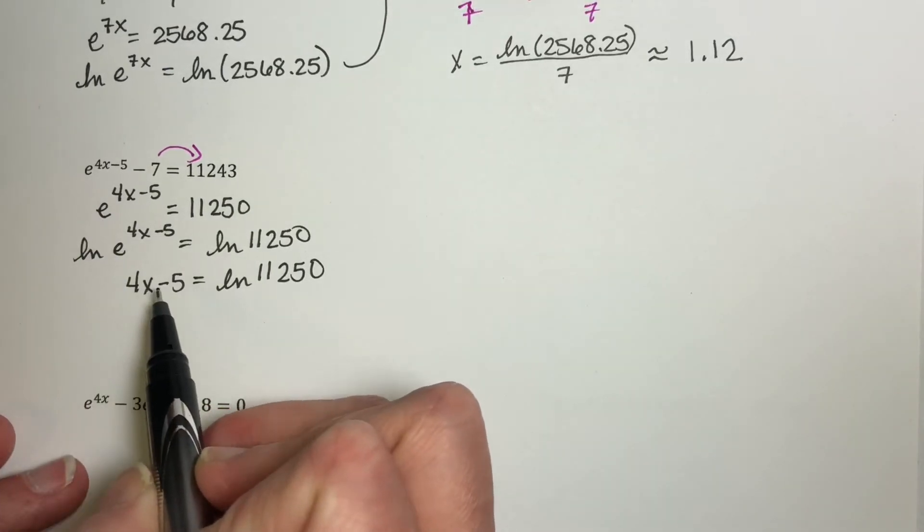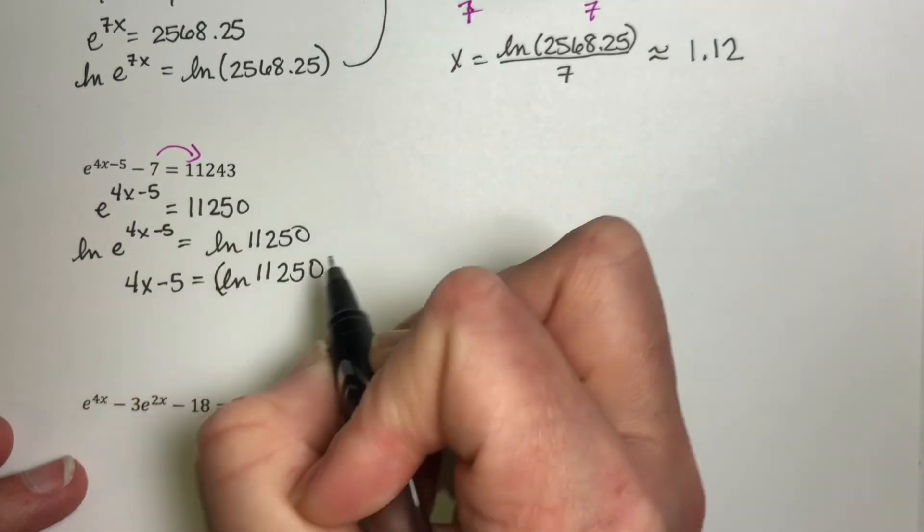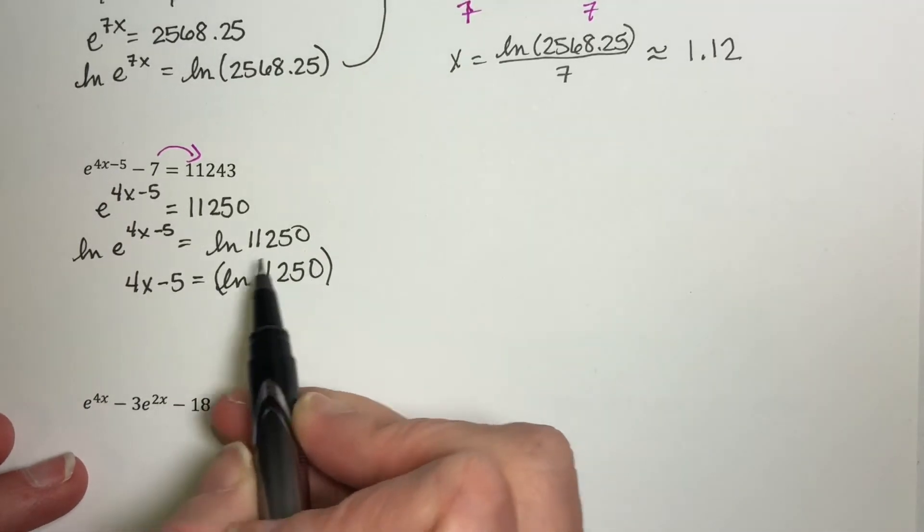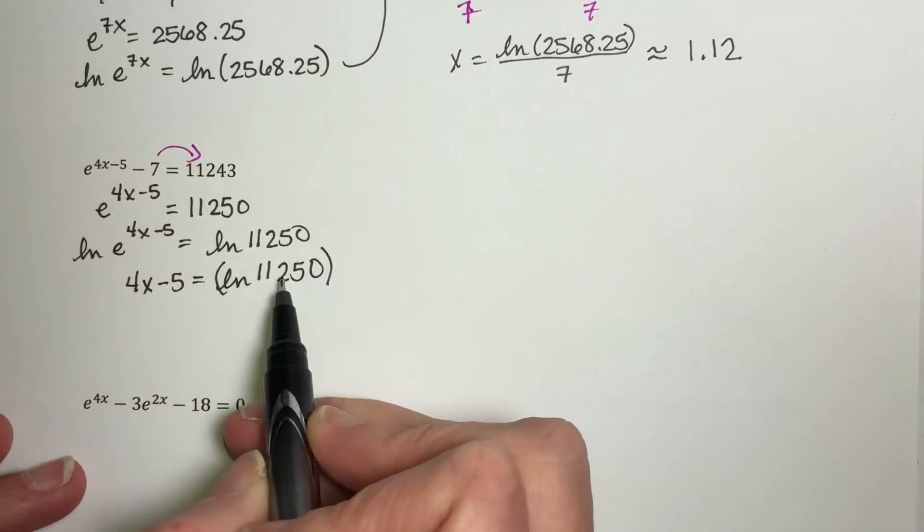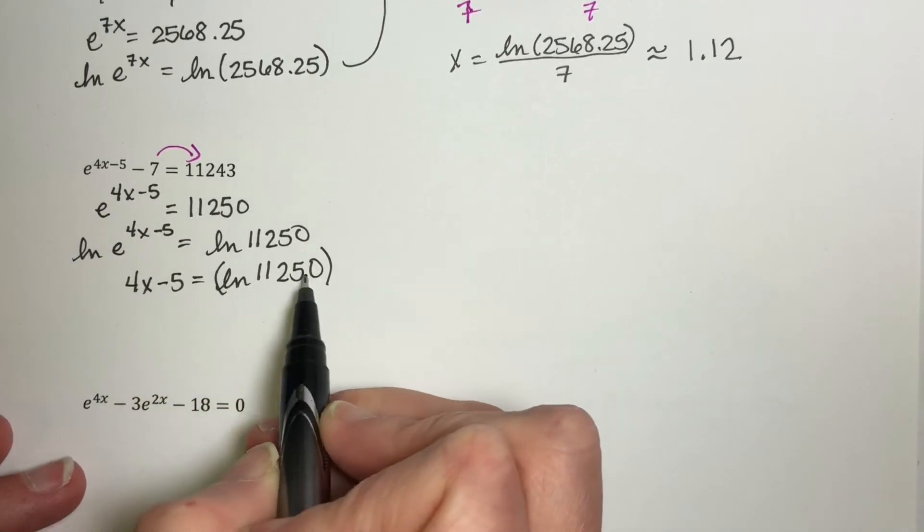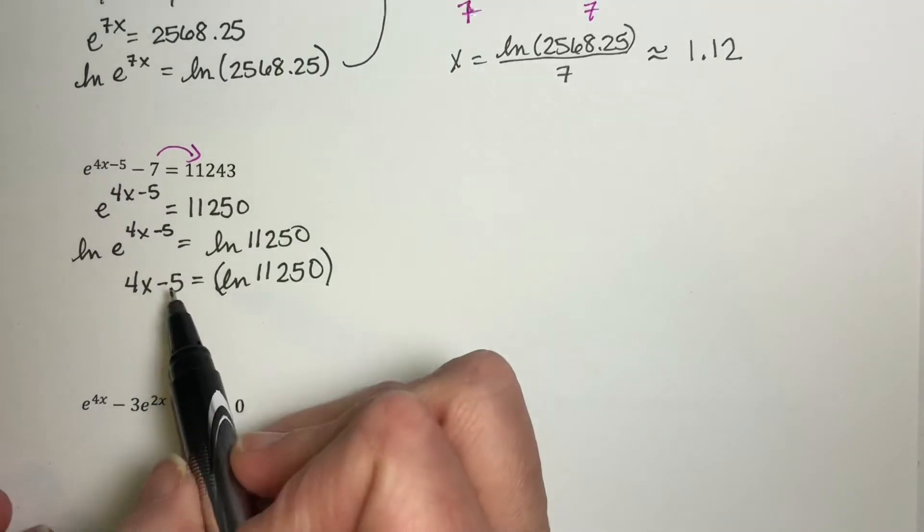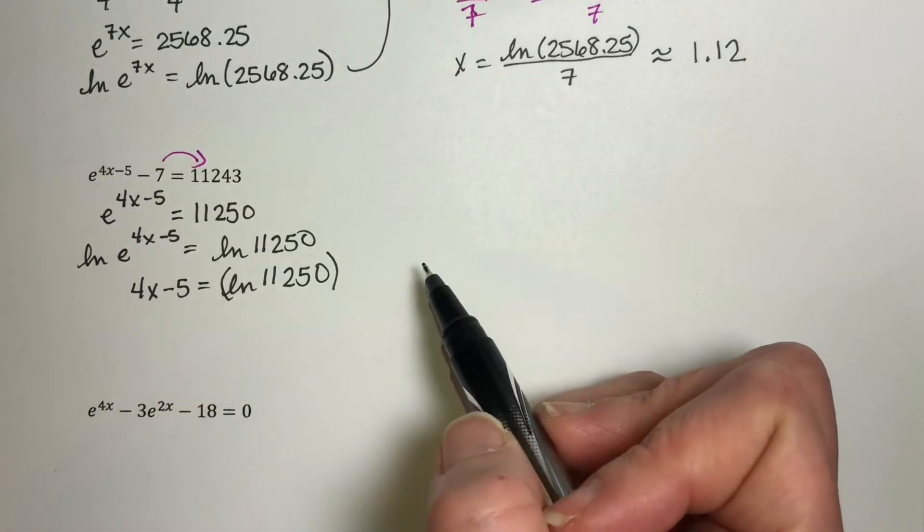Now I want to get this x alone. It is important that you keep all of this together. This is a number. I don't know exactly what it is yet because I haven't put it in my calculator. But what I need to do, since I can't calculate this or I'm not calculating it exactly yet, I can't do anything with this 5 except add it to both sides.